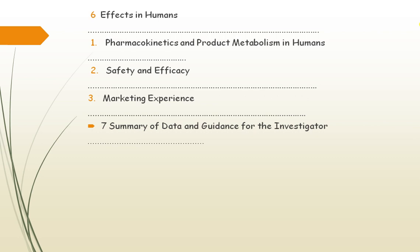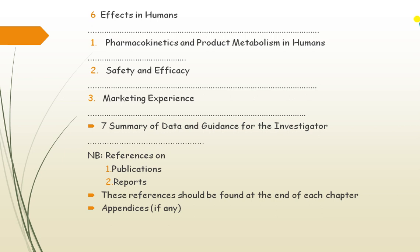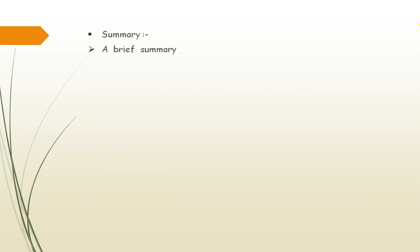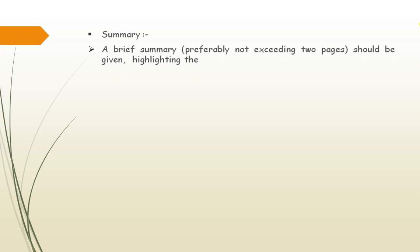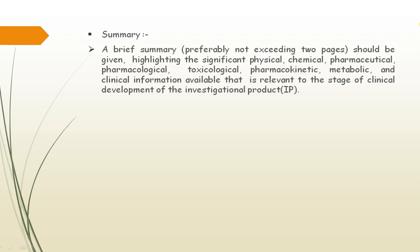References and publications and reports should be found at the end of each chapter or in appendices. The summary section provides brief information highlighting significant physical, chemical, and pharmaceutical, pharmacological, toxicological, pharmacokinetic, metabolic, and clinical information available that is relevant to the stage of clinical development of the investigational product. All this information regarding the investigational product must be compiled in the form of a summary into the Investigator's Brochure.